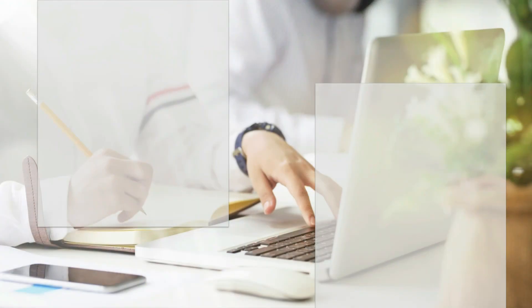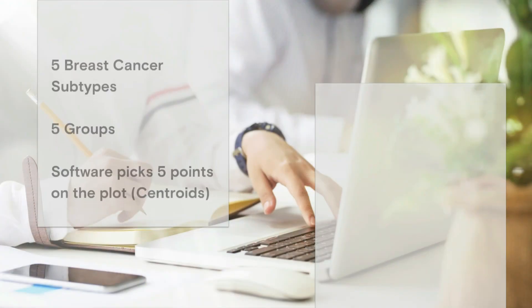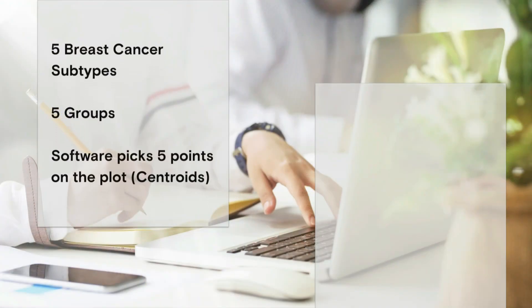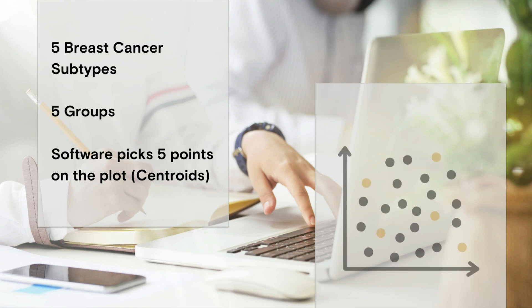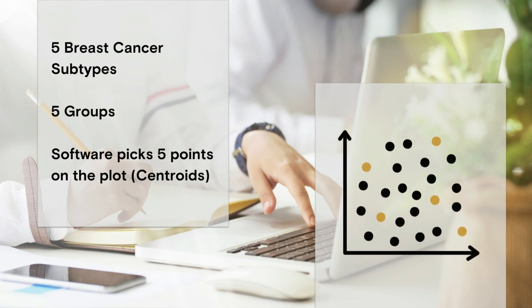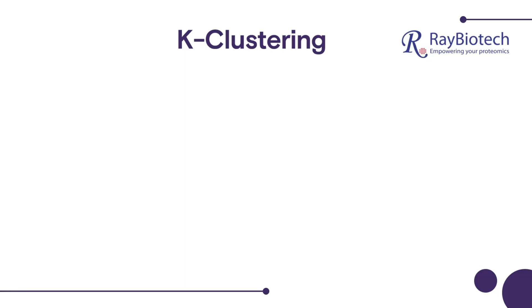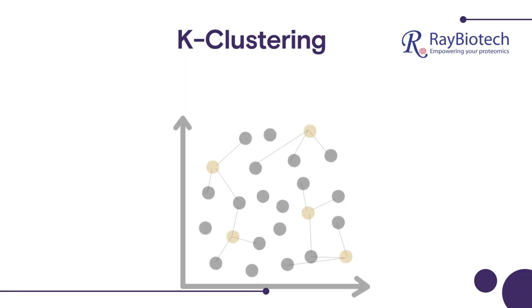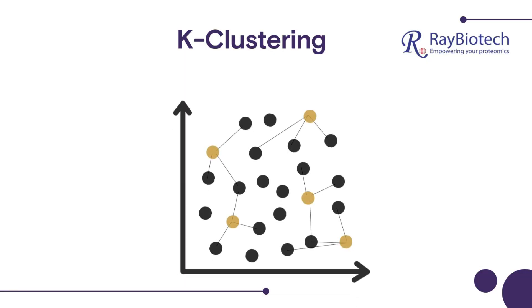Second, and where this technique differs, we tell the software that we want five subtypes. The software picks five points on the plot called centroids. Third, the Euclidean distance — the closest distance between the centroid and sample data — is calculated.